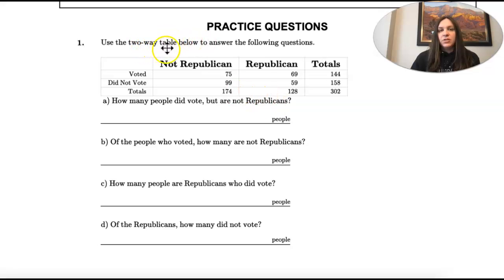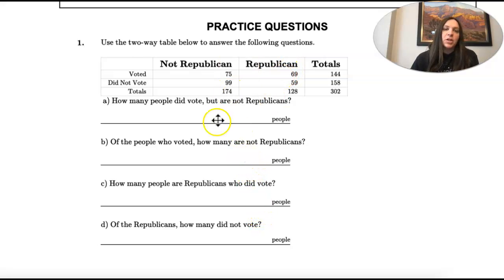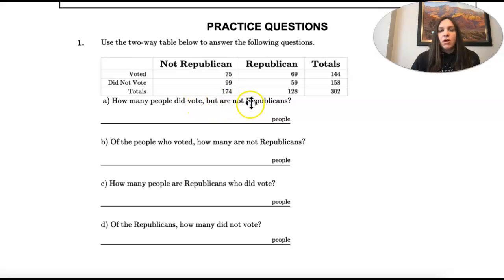We're using a two-way table, also called a frequency table, to answer questions. This question is just to get us familiar with how these tables work. We want to know how many people did vote but are not Republican.